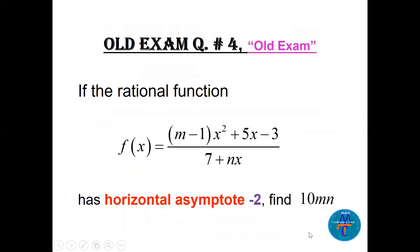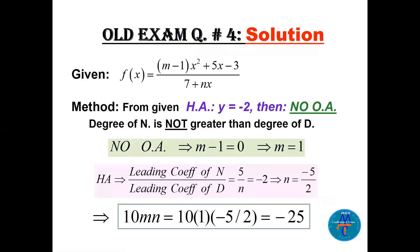Question 4: the rational function has a variable m in the numerator and n in the denominator, and a horizontal asymptote of y = -2. Find 10mn. For there to be a horizontal asymptote (not oblique), the degrees must be equal, so m - 1 = 0, meaning m = 1. The horizontal asymptote equals the leading coefficient of the numerator over the leading coefficient of the denominator: 5/n = -2, so n = -5/2.